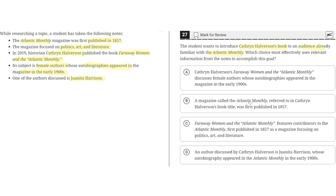Option B: A magazine called The Atlantic Monthly, referred to in Catherine Haverson's book title, was first published in 1857. This is incorrect because this does not introduce Catherine Haverson's book — it just talks about The Atlantic Monthly. So B is incorrect.